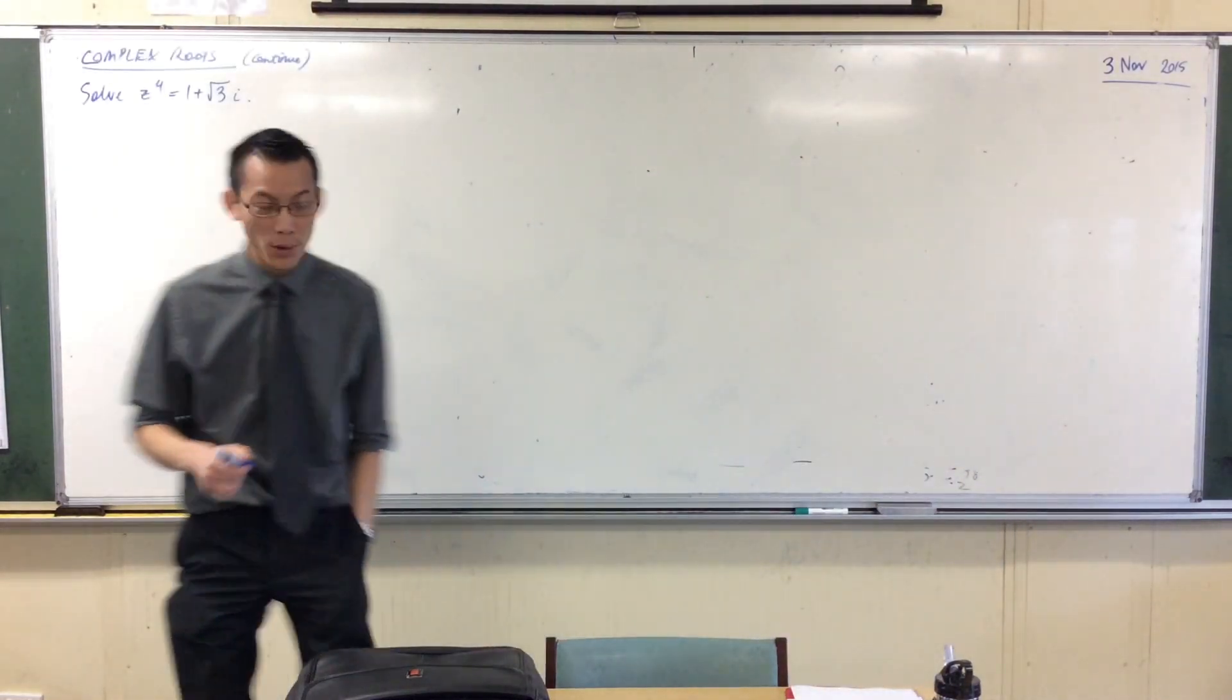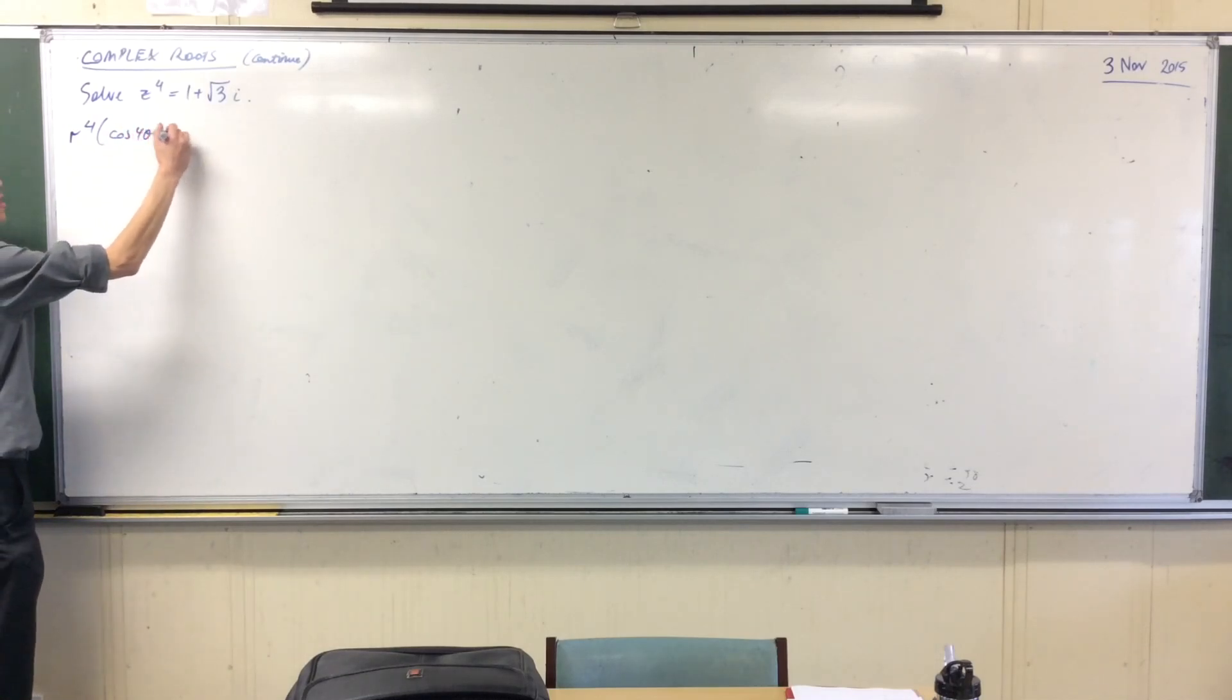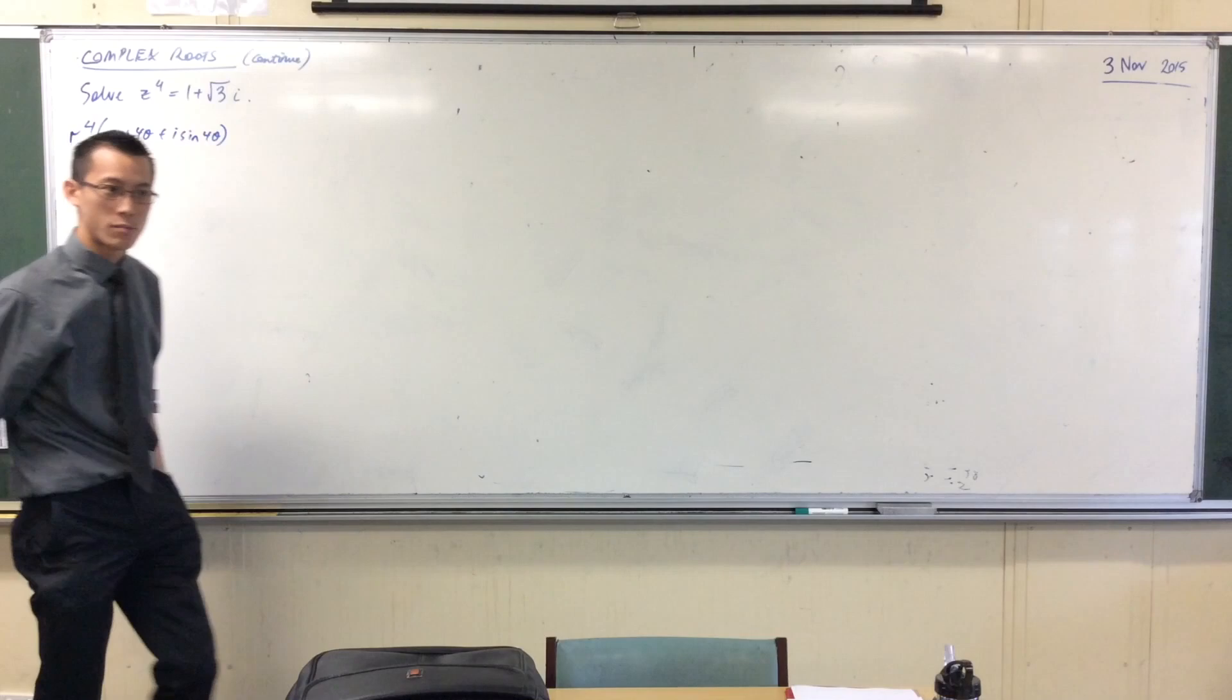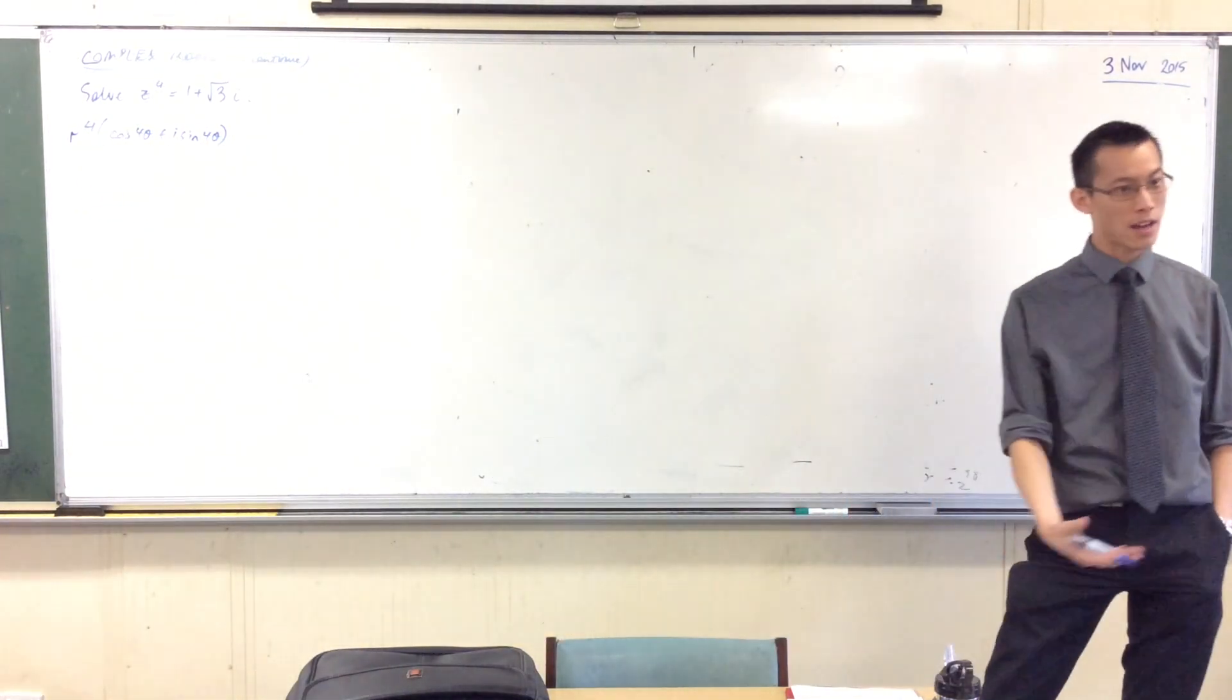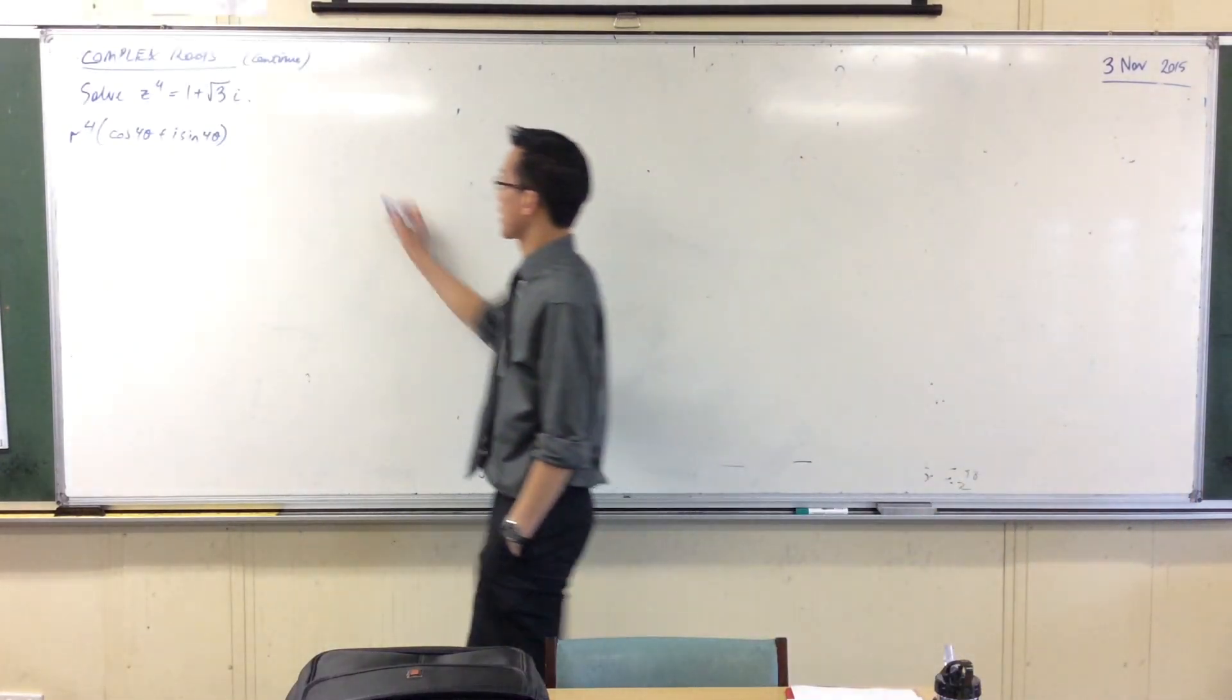But if you recall, I'm going to use De Moivre's theorem to try and work out what are the different values of z, because I can replace z over here on the left-hand side. How can I use De Moivre's theorem? In order to make some reasonable comparison, I need to get the right-hand side in the same form as well.